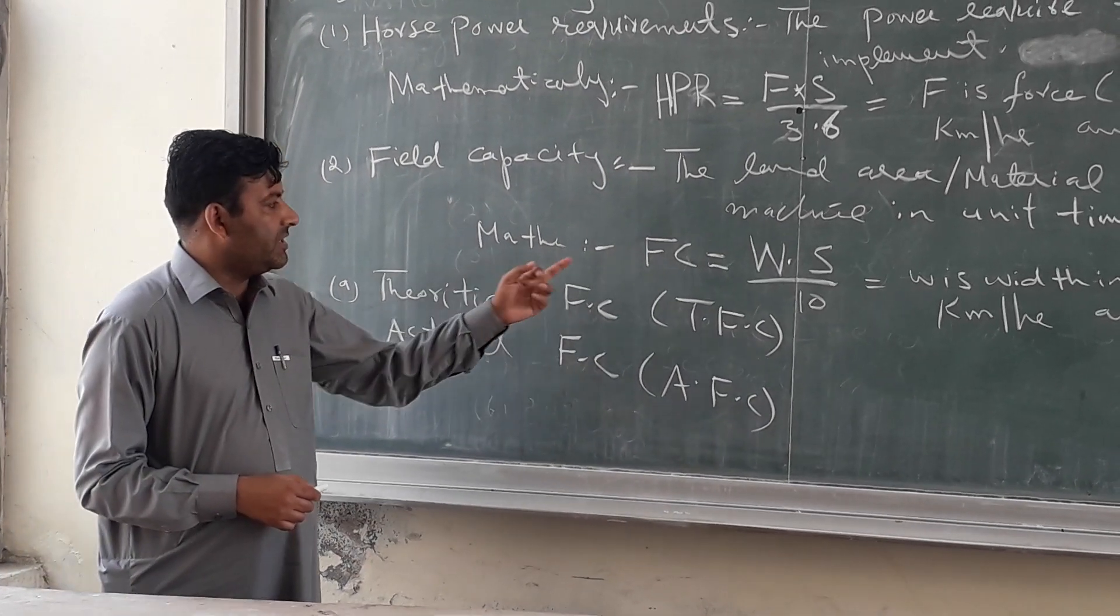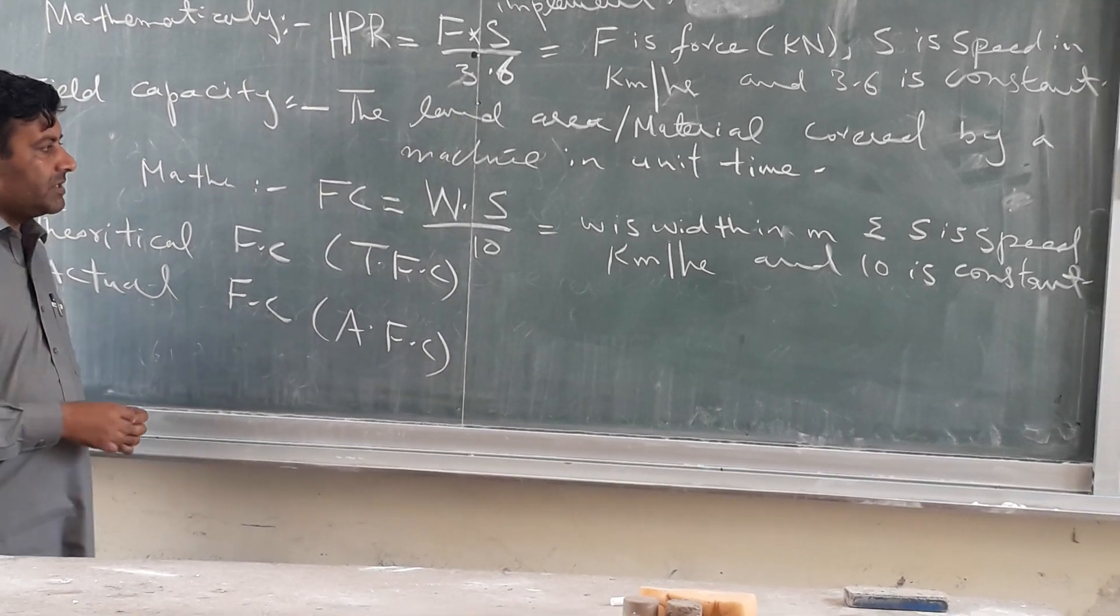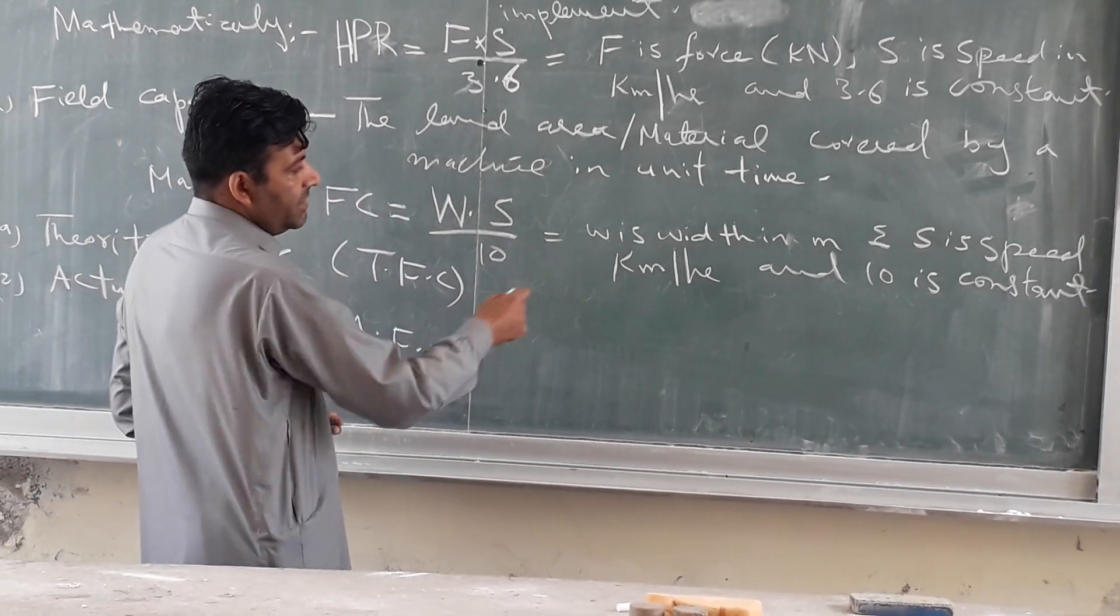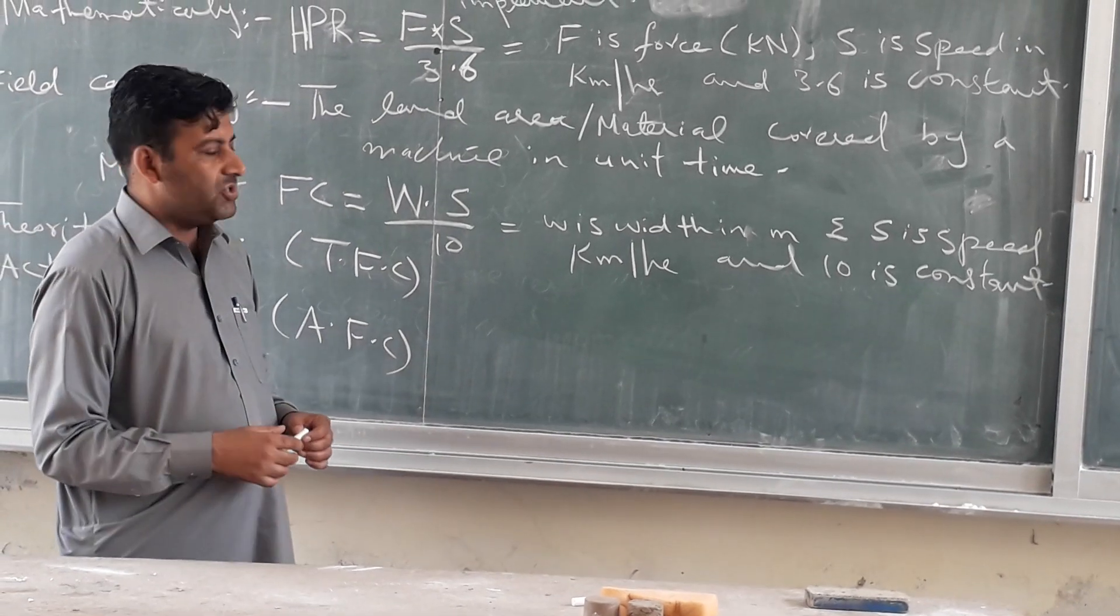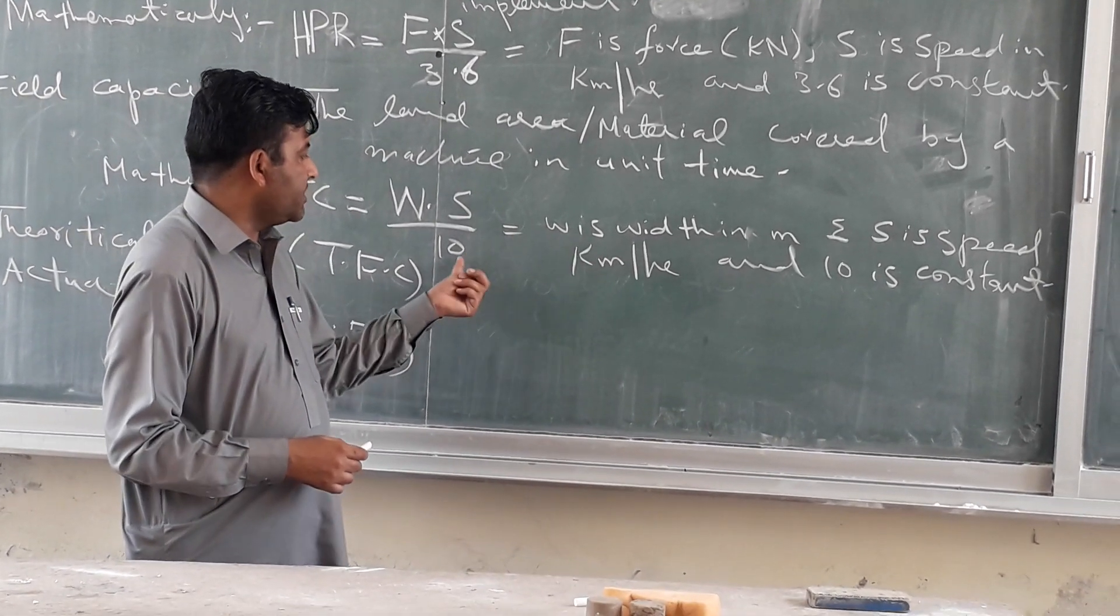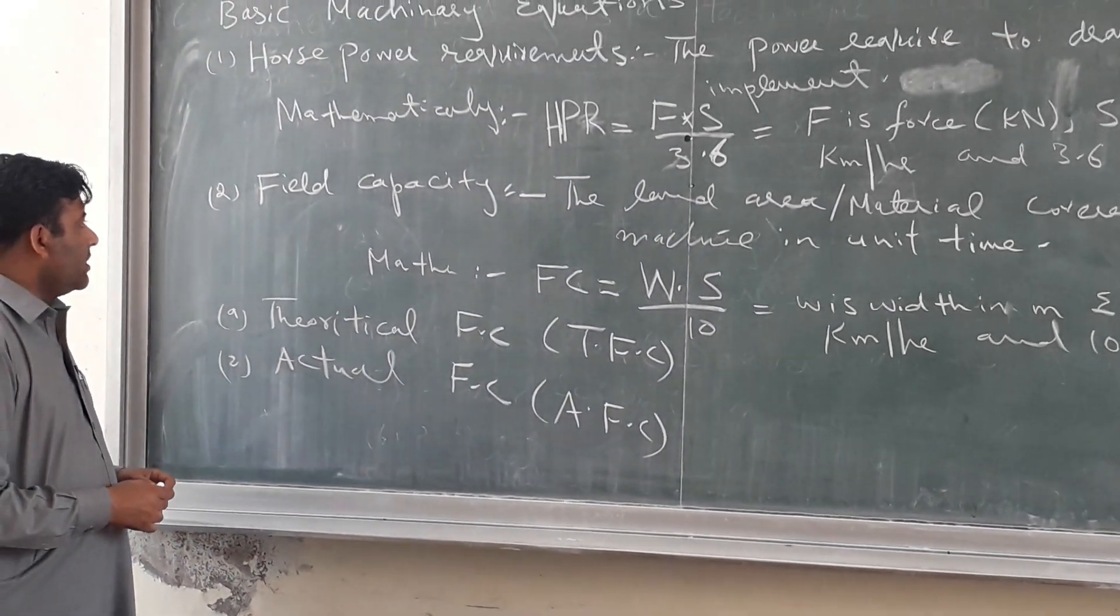So what is field capacity? It is W into S divided by 10, where W is width of the machine in meters and S is the speed of the machine in km per hour, and 10 is again constant in the formula.